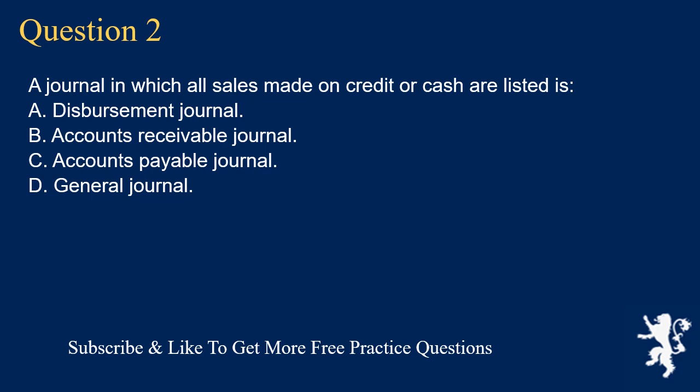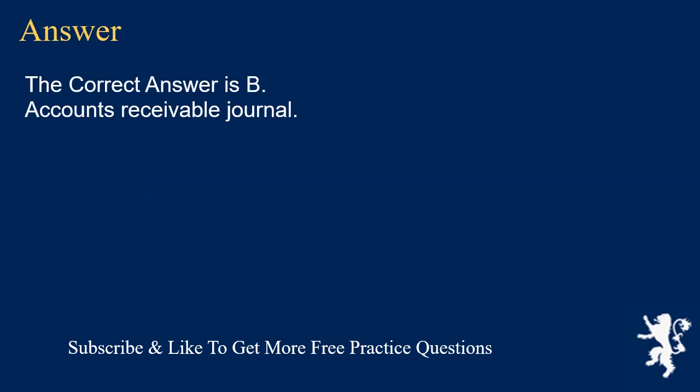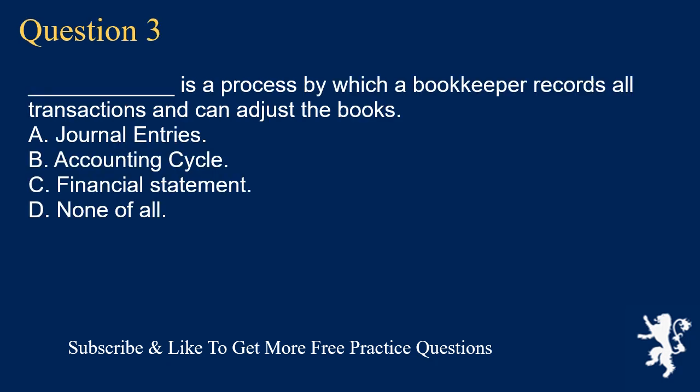Question 2: A journal in which all sales made on credit or cash are listed is: A. Disbursement journal. B. Accounts receivable journal. C. Accounts payable journal. D. General journal. The correct answer is B. Accounts receivable journal.